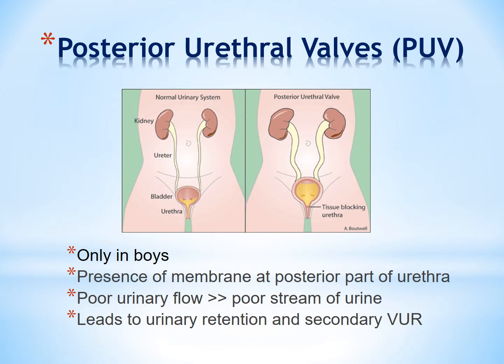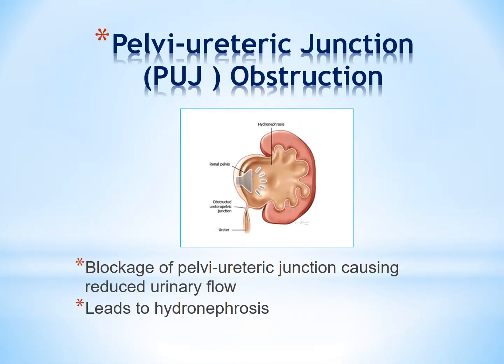Posterior urethral valves is a condition that occurs only in boys. There is presence of a membrane at the posterior part of the urethra, causing poor urinary flow which manifests as poor stream of urine. The bladder outlet obstruction inevitably leads to urinary retention with secondary vesicoureteric reflux. In PUJ obstruction, there is blockage at the pelvi-ureteric junction causing reduced flow of urine from the renal pelvis into the ureter, leading to hydronephrosis.